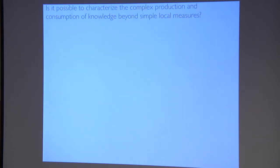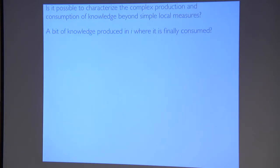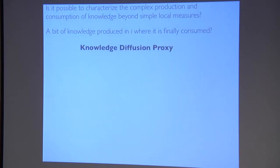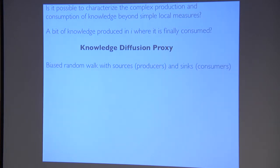The question now is: how can we characterize the system? We have different layers and different types of networks. How can we characterize the complex set of relationships between producers and consumers, going beyond the simple local perspective? If a bit of knowledge is produced in node I, where — everything considered — is it finally consumed? To address this, we present an algorithm we call the knowledge diffusion proxy.